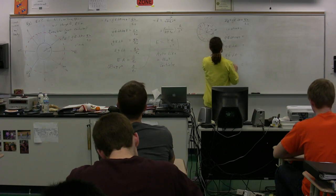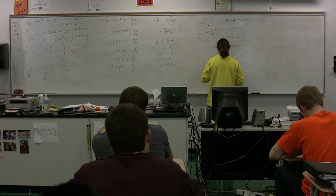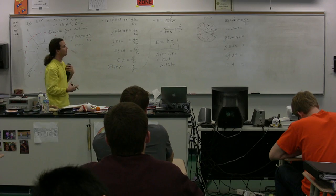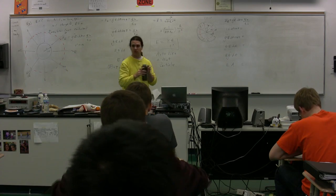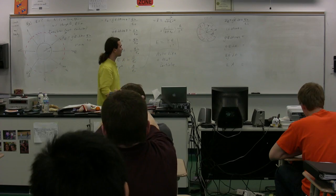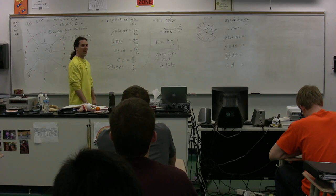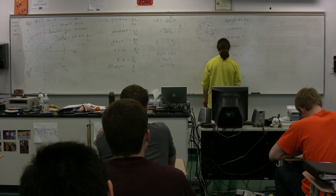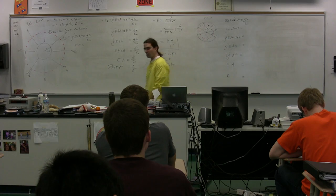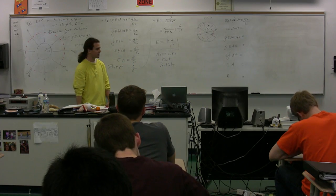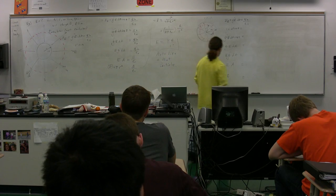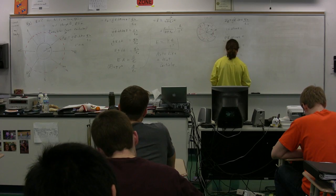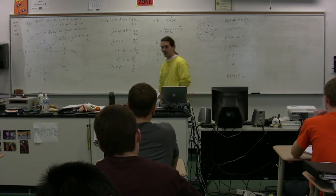The cosine cancels out, and then you can pull E out because it's constant. Then you just have E times the closed surface integral dA, and that integral just gives you the area A, so it's just EA. The area of the Gaussian surface is 4πr², so the left-hand side is E times 4πr².